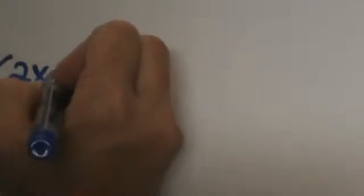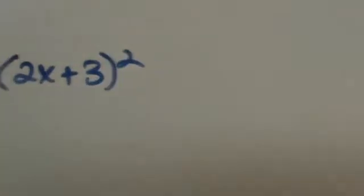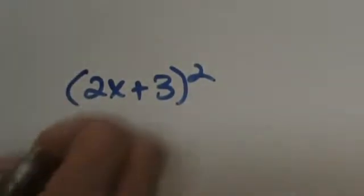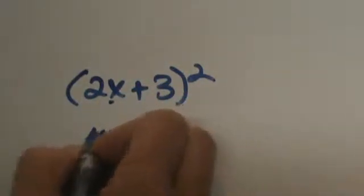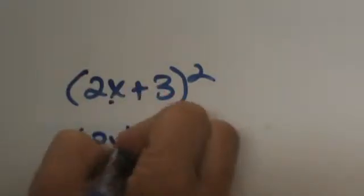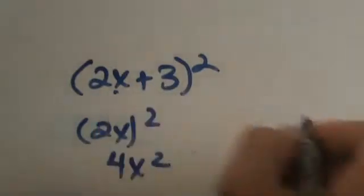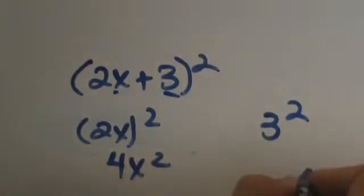This one is not on your note taking guide but I just want to show you another example. If you have 2x plus 3 and you are going to square that, the first term would be this first term squared, which is 2x squared. Let me write it like this: it would be the first term quantity squared which would be 4x squared. The last term would be the last term squared which is 9.